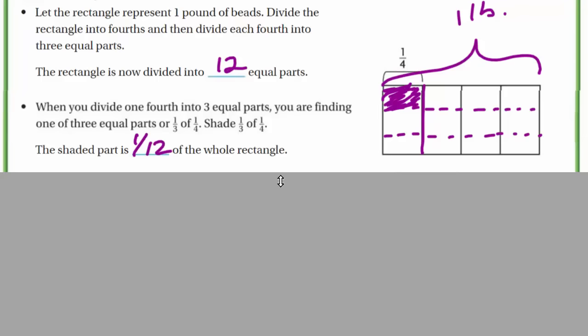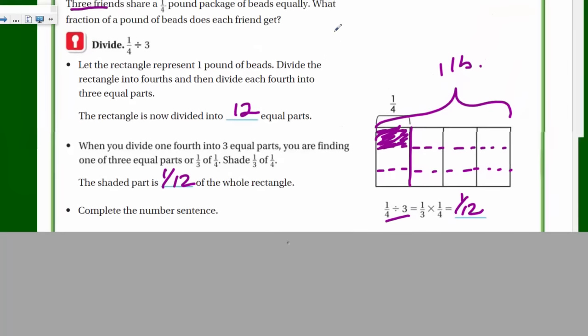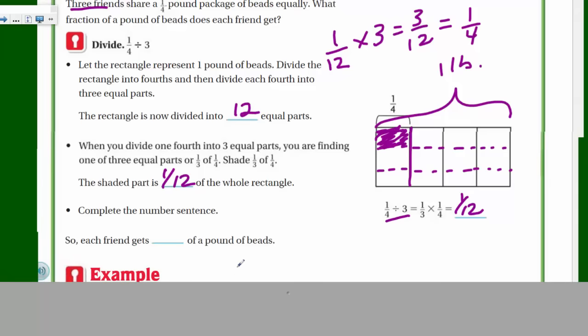And this shaded part is one-twelfth of the whole rectangle. Cool? Complete the number sentence. One-quarter divided by three equals one-twelfth. Well, they actually turn the division sentence into a multiplication sentence. And we can check our work where we can take our one-twelfth now as the quotient and multiply that by the divisor, giving us three-twelfths. And then we can reduce that to one-fourth. So each friend gets one-twelfth of a pound of beads.